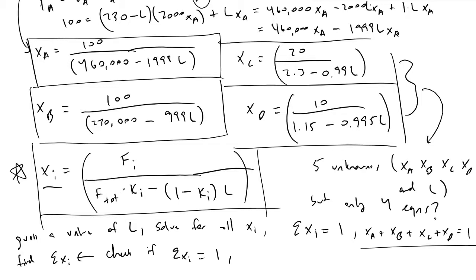Based on physical intuition, your liquid flow rate must be between 0 and 230, because you're not generating or consuming moles and you'll have a liquid effluent. Guess L to be half of your feed, so 0.5 times F, which in this case is 115. Then solve for x_i, and you'd arrive at some value that's not equal to one, then you would change your L value.